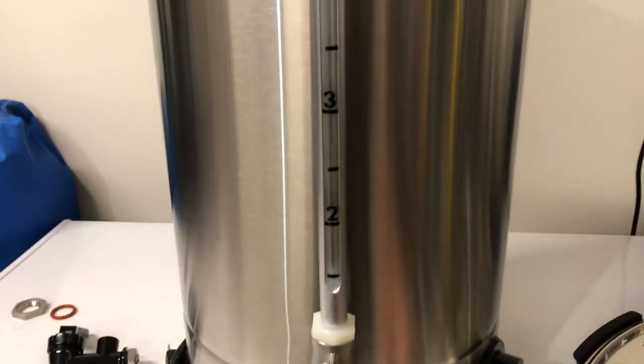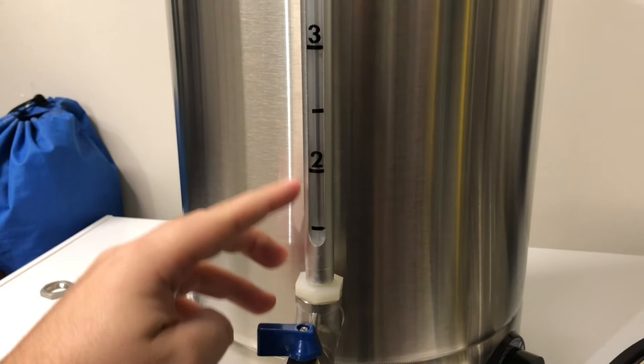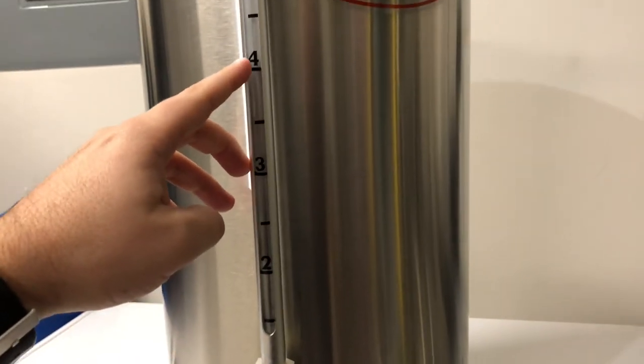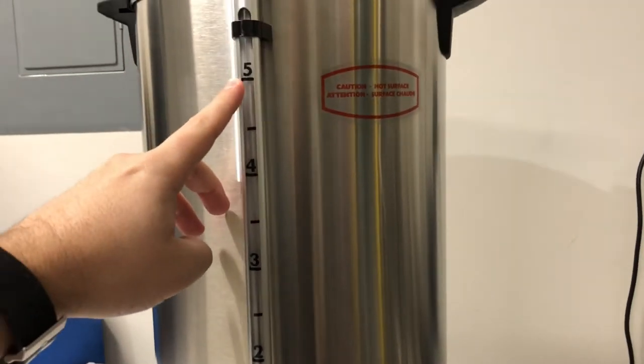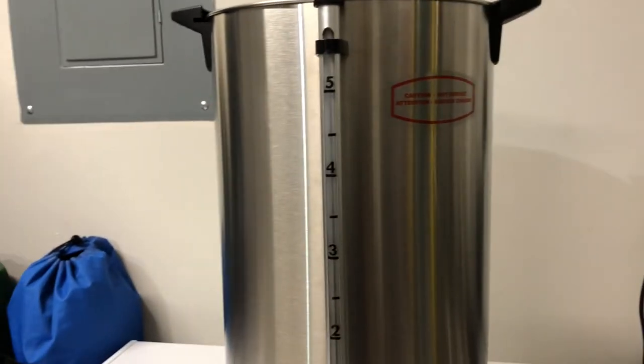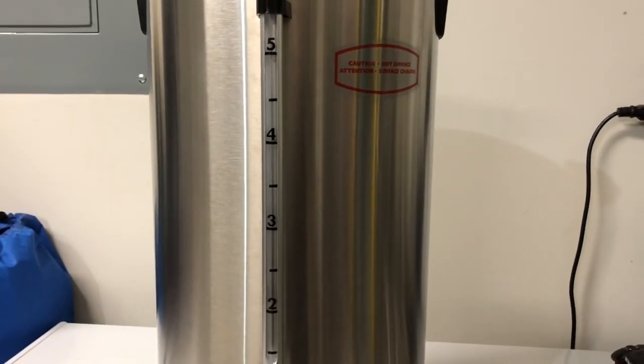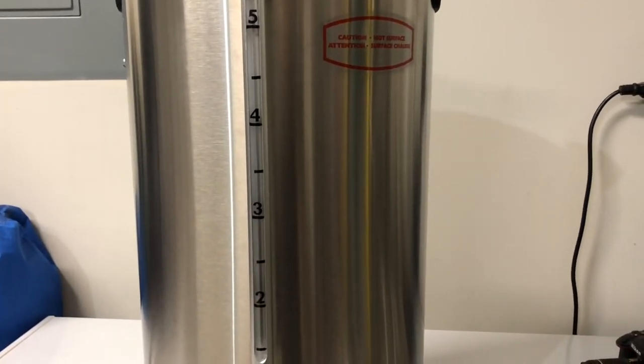All right. So here you will notice my gallon increments here. So one and a half, two, two and a half, three, three and a half, four, four and a half, five. So when you first buy this, they tell you it has a 4.35 gallon capacity.